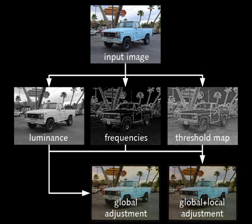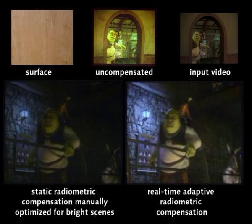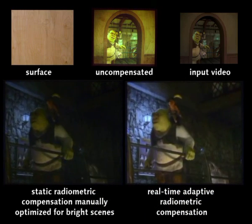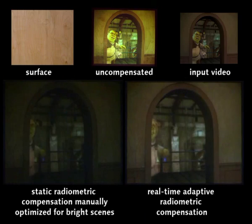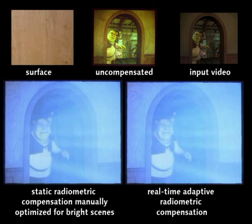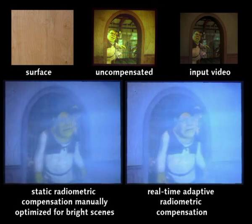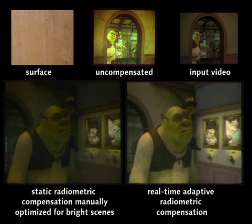In the following, we show several compensated video examples projected onto different surfaces. These videos are projected onto a wooden panel. While a traditional compensation algorithm was used on the left, the results of our adaptive algorithm can be seen on the right.